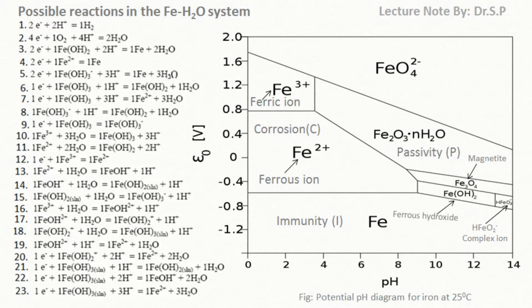The potential-pH diagram for the Fe-H₂O system gives very important information about the corrosion of iron in aqueous environments having different pH. Let's discuss the potential-pH diagram of the Fe-H₂O system.